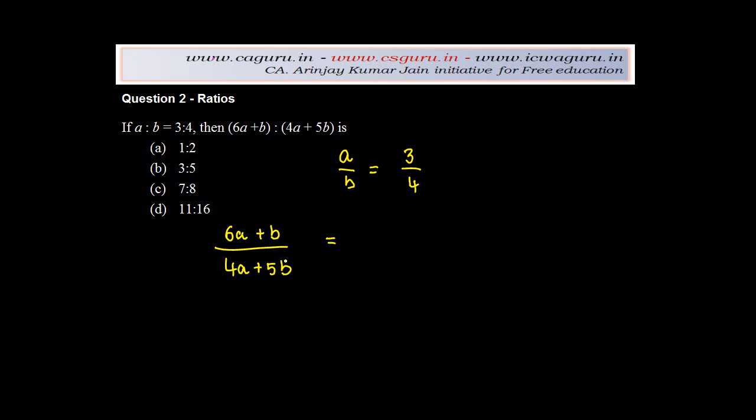So one historical method that you have been following is the substitution method. So a is equal to 3 upon 4b, and then put in this value at every place where a is present.